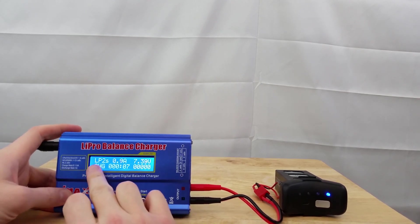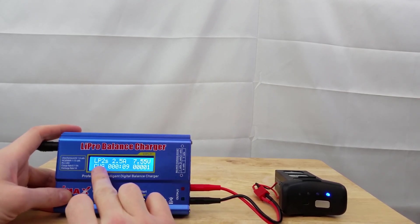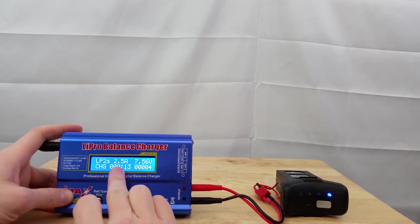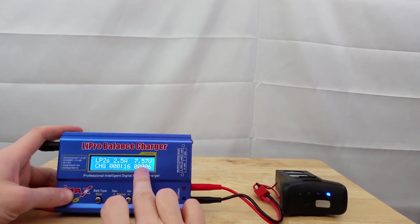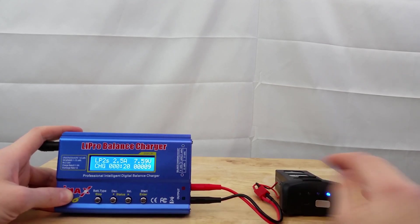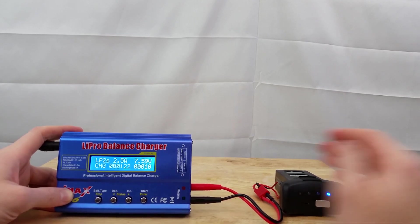So this tells you this is the lipo battery setting, two cells in series. It is currently charging it at 2.5 amps. And this voltage here on the right is the current voltage of the battery. When this gets to 100%, it'll be at 8.4 volts.